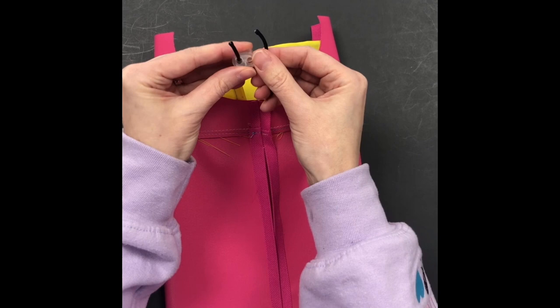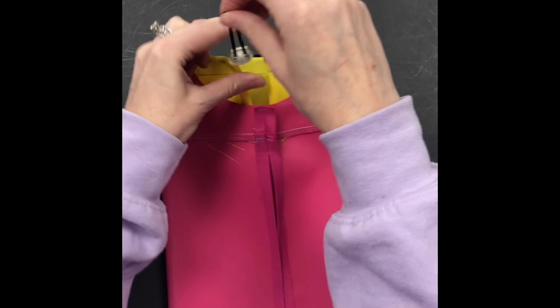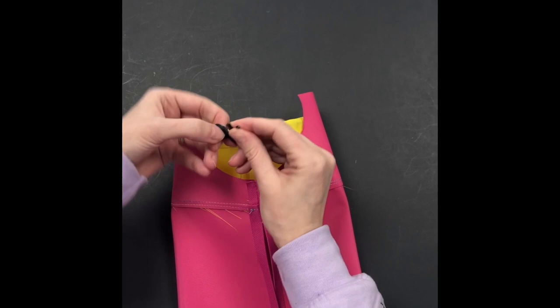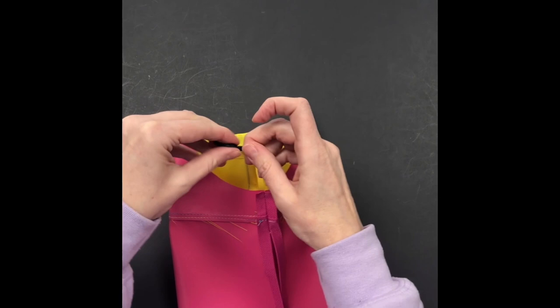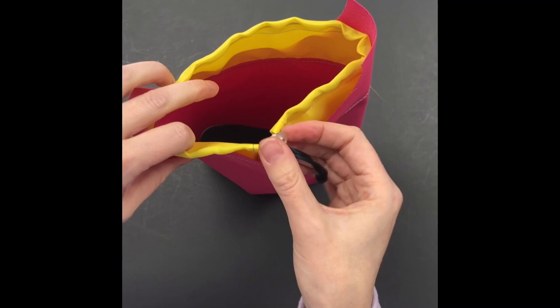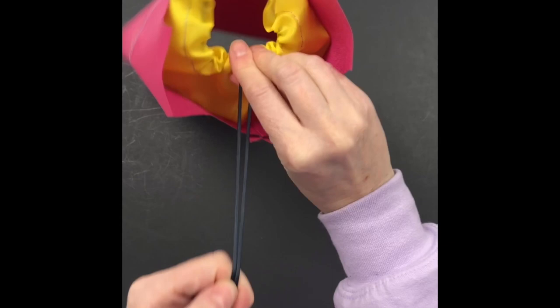Thread through on both sides so you have to go from back to front in order to get them through. And then I will just knot these two ends together, you can do one at a time together it doesn't really matter. Okay there you go so you push the button to release the tension and then you compress the button to cinch it.